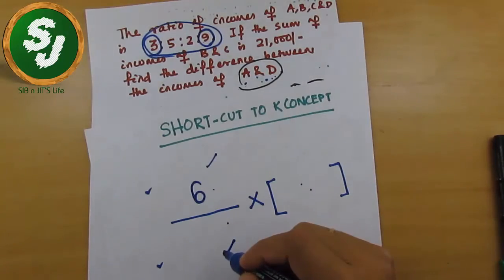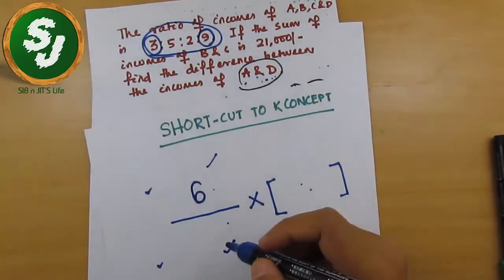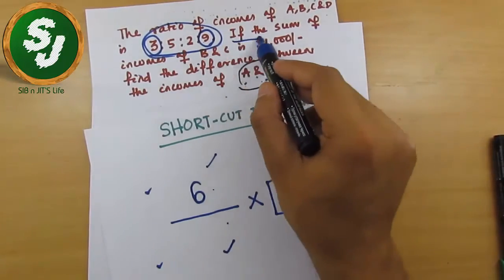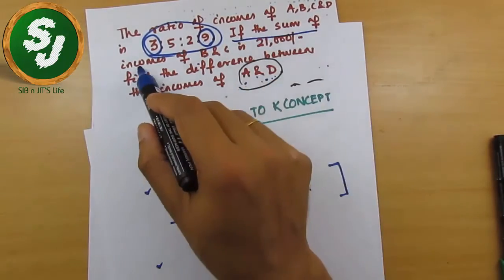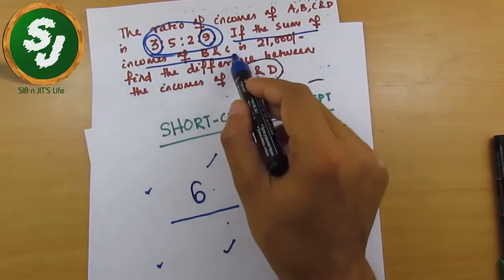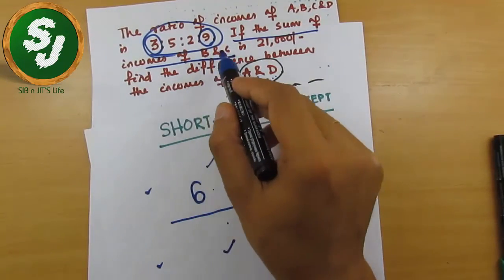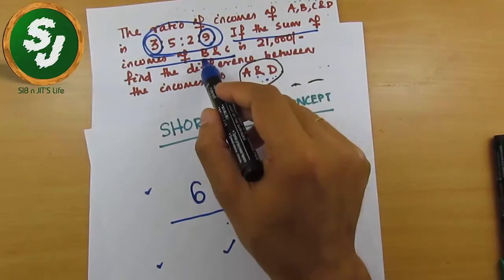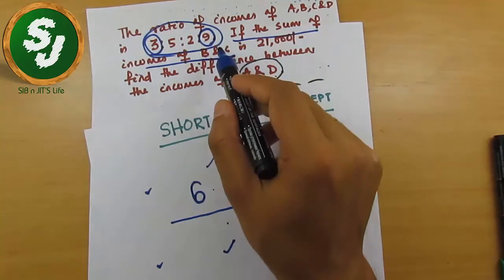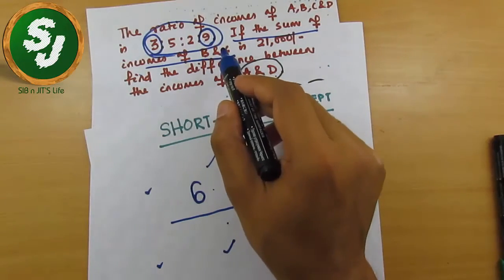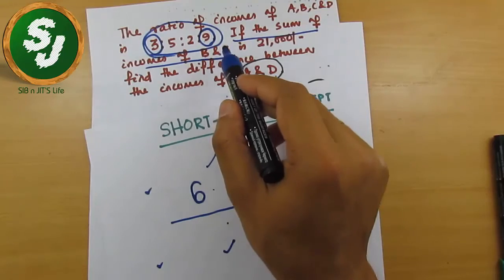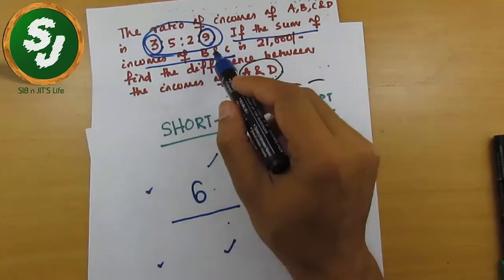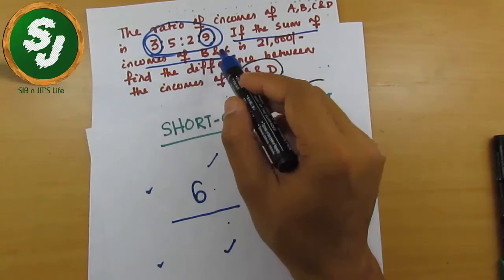In the denominator part, write the ratio part of the extra information given in the question. The extra information said the sum of incomes of B and C is 21,000. So it is the sum of incomes of B and C whose ratio part is to be written in the denominator.